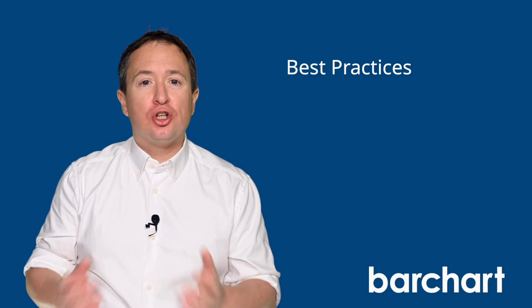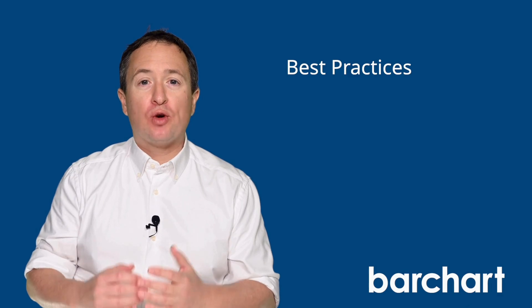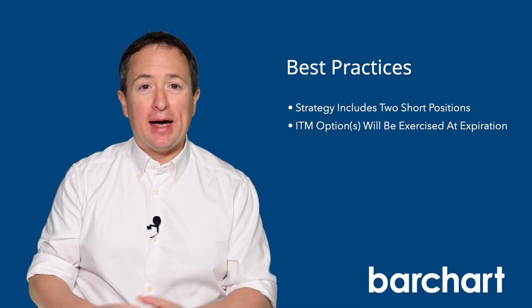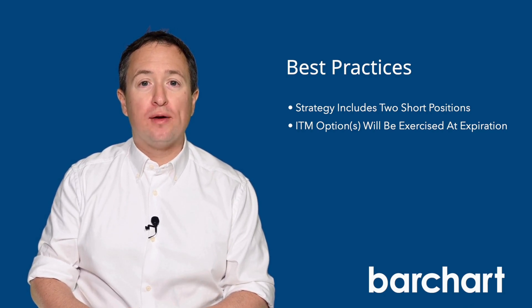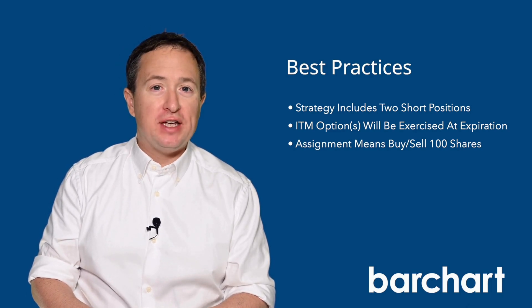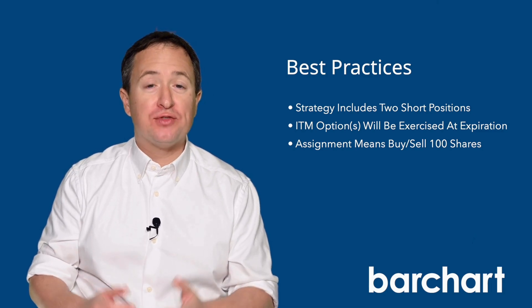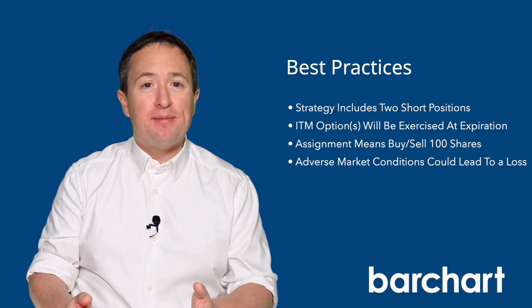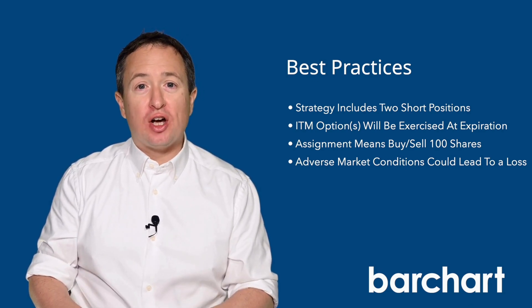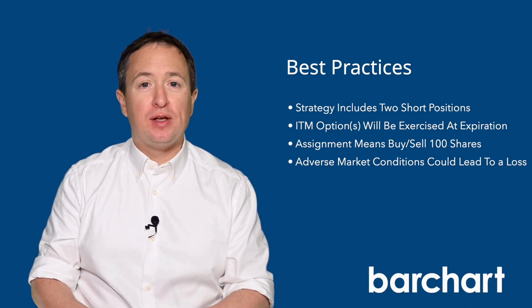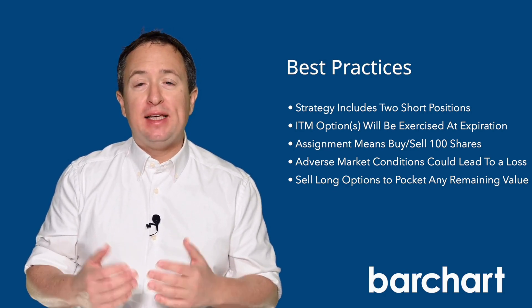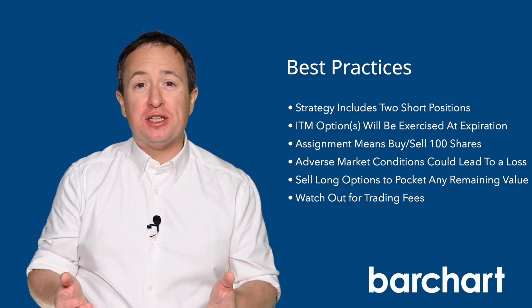It's always a good idea to close your positions right before expiration when using any strategy that requires writing or selling options. You have two short positions in this trade, and if either is in the money by expiration, the option will be automatically exercised — or from your perspective, you'll be assigned. If any short options get assigned, you're either obligated to buy 100 shares of the underlying for every put you wrote, or sell 100 shares for every call you sold. These positions may require significant capital, so you may want to set an alert if the stock goes above or below a certain price. You can also sell the relevant long positions to capture any remaining value, which may mitigate some of the losses — but keep an eye on trading fees, because if they exceed the options premium, it won't be worth it.